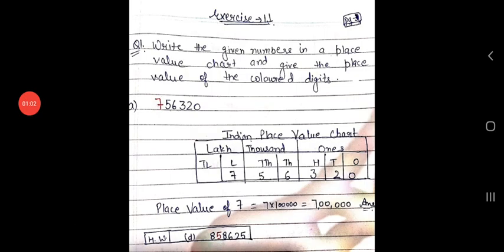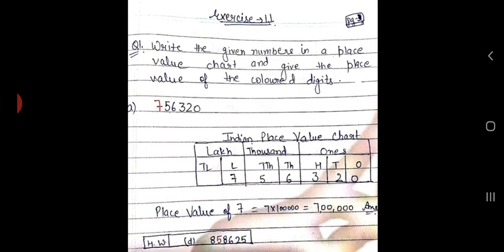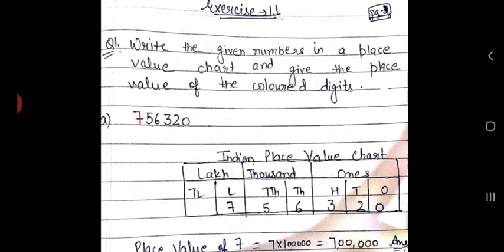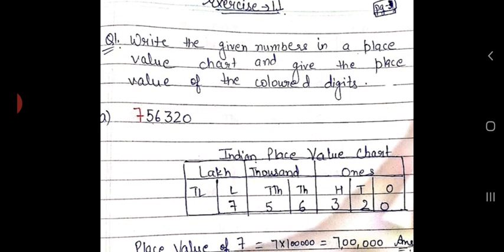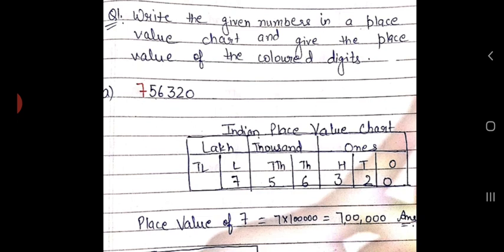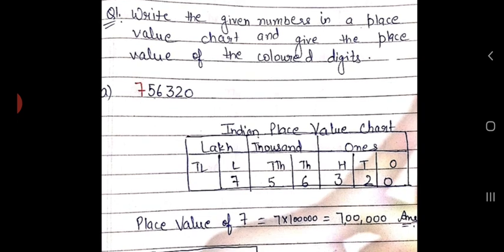Now come to the third page. Here you have to start your Exercise 1.1. Put the date again on the left side. Question number 1 is: write the given numbers in the place value chart and give the place value of the colored digit. First you need to prepare the place value chart, as I have already discussed in my video lecture number 1.